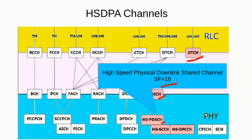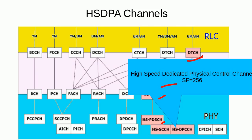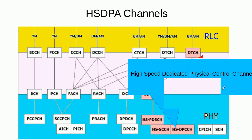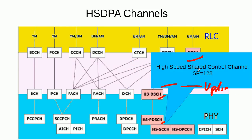This is a data channel, and for it to function properly, control channels are needed. The control channels are: the high speed dedicated physical control channel, with a spreading factor of 256, used in the uplink; and the high speed shared control channel, with a spreading factor of 128, used in the downlink. These two control channels are used along with the physical data channel for proper HSDPA operation.